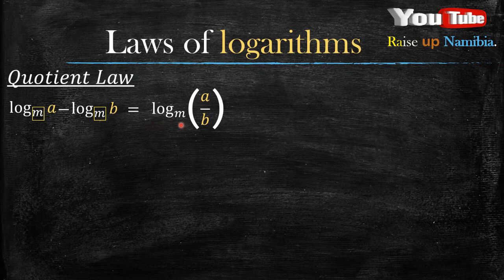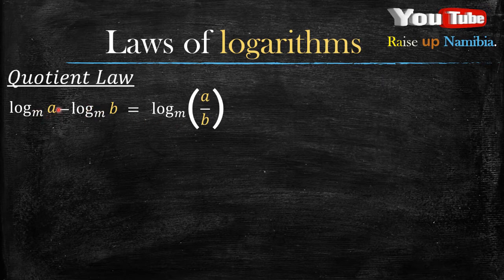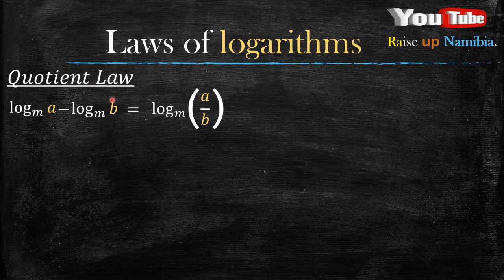Now, that same base is what we will have in our answer. That's why we also have log base m in our answer. Once your bases are the same, you check whatever number is at a and you divide it with whatever number is at b.